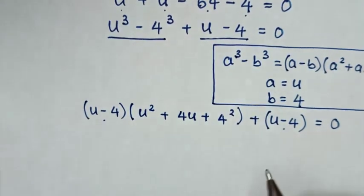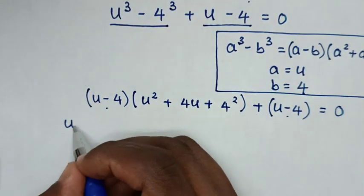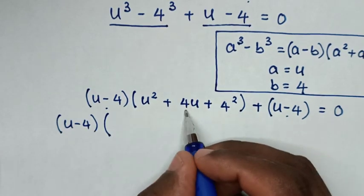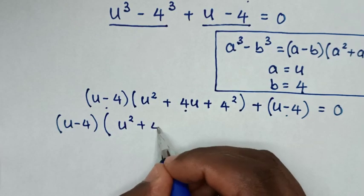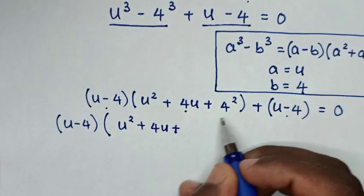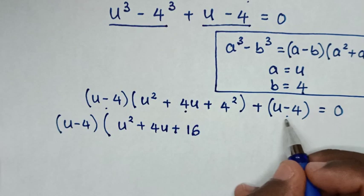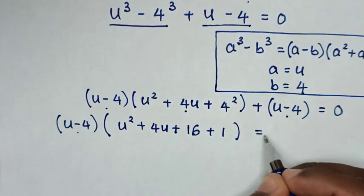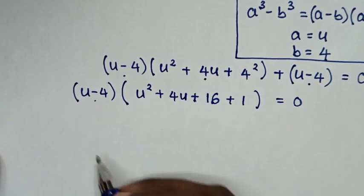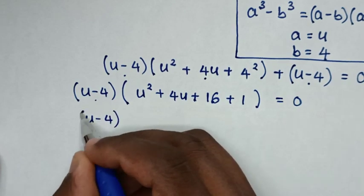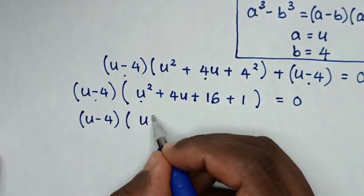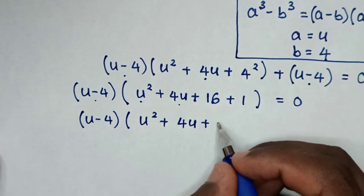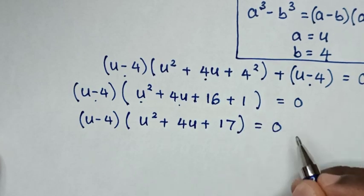Then in the next step, u minus 4 is common, so we take u minus 4 bracket out. Then this divided by this is u squared plus 4u plus 4 squared which is 16, and this divided by this is 1, so it will be plus 1 bracket is equal to 0. Then in the next step, it will be u minus 4 bracket times u squared plus 4u plus 16 plus 1 which is 17, bracket is equal to 0.